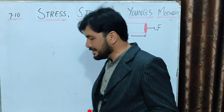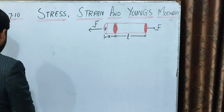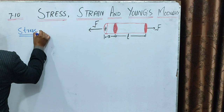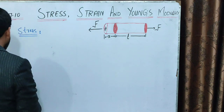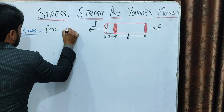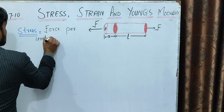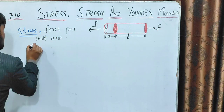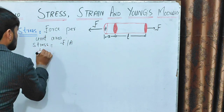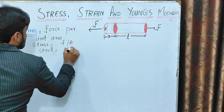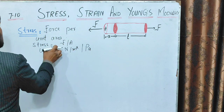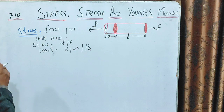Tension force — stress. Force per unit area is called stress. Stress is equal to F divided by A. The unit is Newton per meter square. So stress is force per unit area.